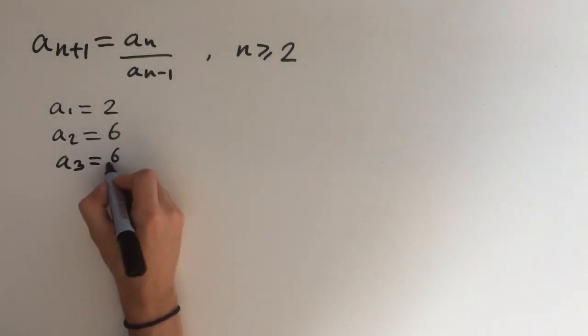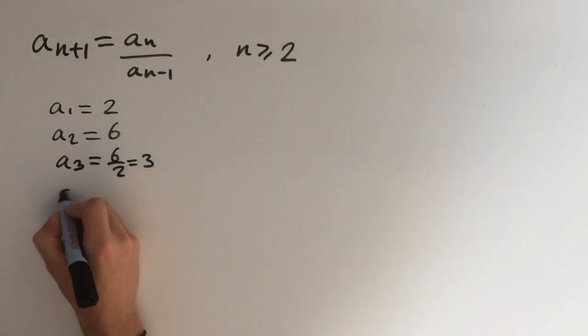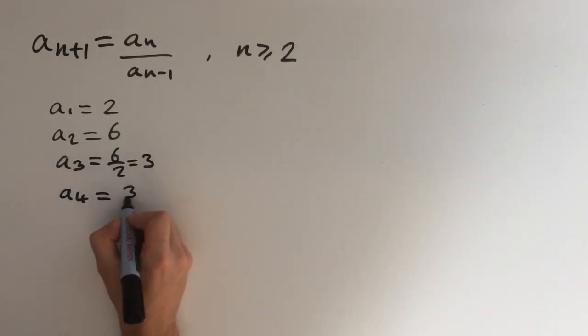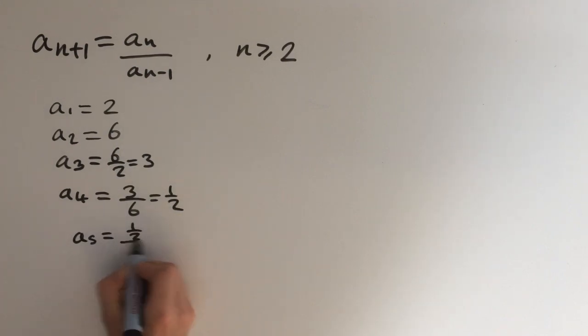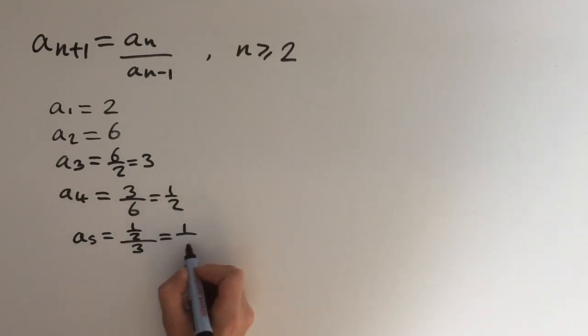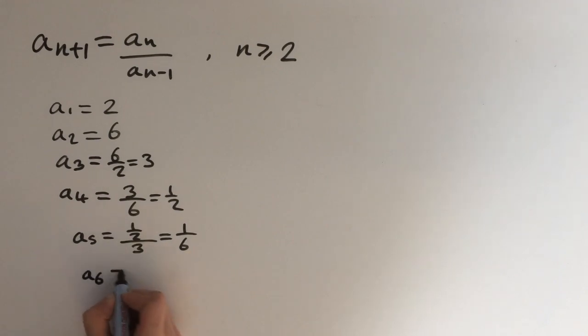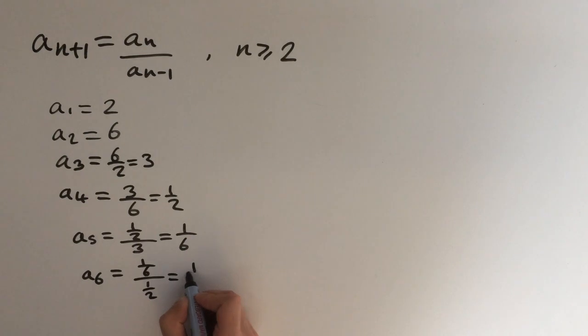a_3 equals 6 over 2, which equals 3. a_4 equals 3 over 6, which equals 1 half. a_5 equals 1 half over 3, this equals 1 sixth. a_6 equals 1 sixth over 1 half, and this equals 1 third.